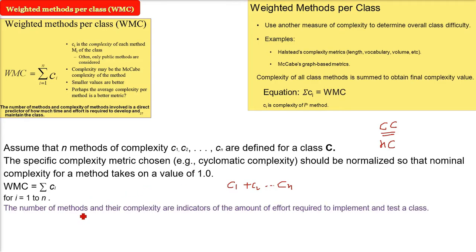So you just have to add these complexities. This is the weighted methods per class. So the number of methods and their complexity are indicators of the amount of effort required to implement and test a class.